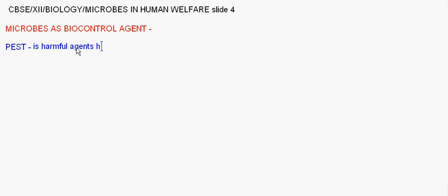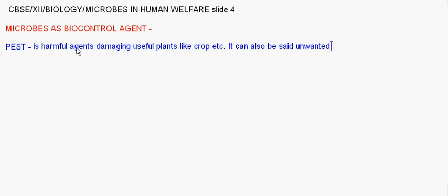What is a pest? A pest is a harmful agent that damages useful plants like crops. Unwanted plants are called weeds. So, any unwanted or harmful living being that basically damages useful plants like crops are called pests.